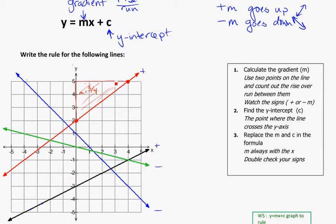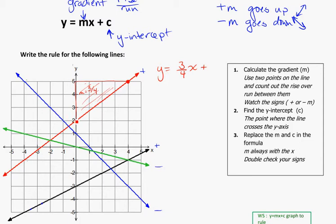It's always rise over run, and the run is always to the right — you never run left. So that's the gradient found. Now the next thing to find is the y-intercept, which is just where the line crosses the y-axis. Here we can see that it's 2. So replacing m and c in the formula y equals mx plus c: for this red line the gradient is 3 over 4, so instead of m we write 3 over 4, and instead of c we write 2 because the y-intercept is at 2.